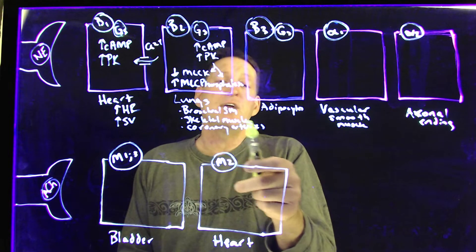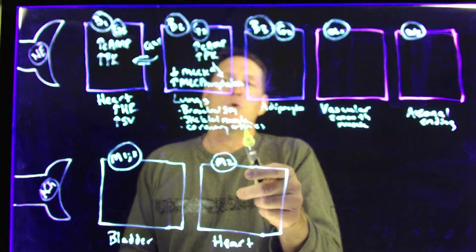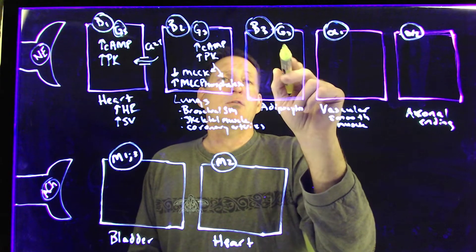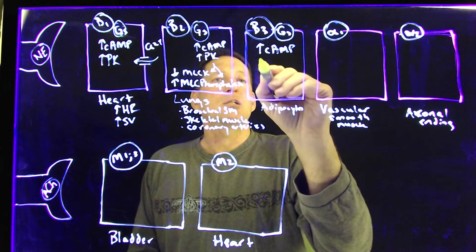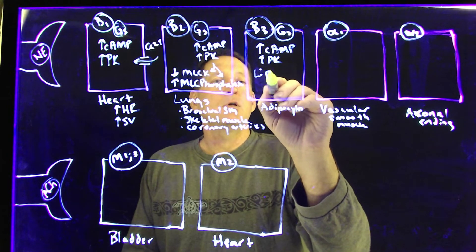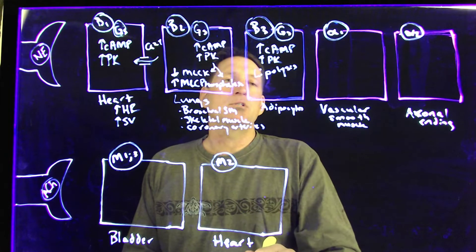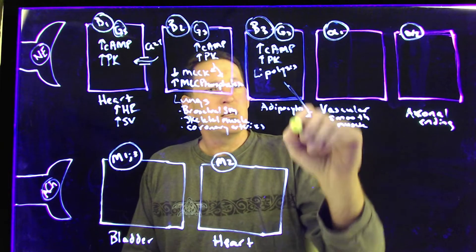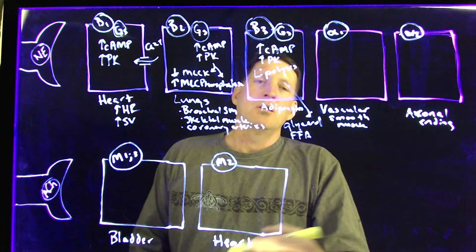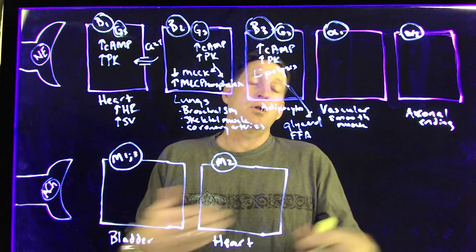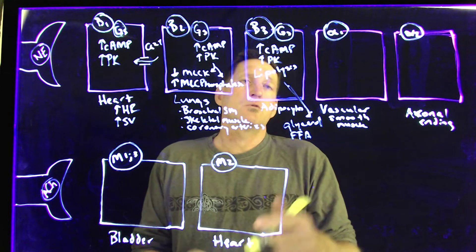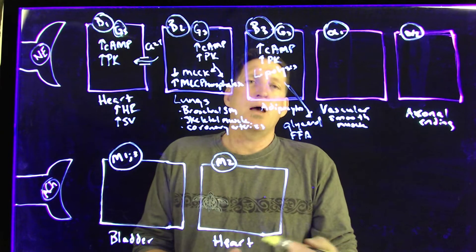This leads to vasodilation of the vessels in skeletal muscle and vasodilation of the coronary arteries. For beta-3 receptors in adipocytes, when norepinephrine plugs into a beta-3 receptor and activates the GS protein, we again increase cyclic AMP, which increases protein kinase, and that causes lipolysis — breaking down lipids within the adipocytes and releasing them as glycerol and free fatty acids. Those can then be utilized by muscles during activity. Around 10 to 15 minutes into exercise, you start using fat as a fuel source instead of glucose, and norepinephrine triggering beta-3 drives that release.